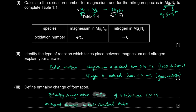If this were the standard enthalpy change of formation, the one mole of substance being made would also have to be in its standard state, and the elements would have to be in their standard states under standard conditions. But this is just the enthalpy change of formation, not the standard version. So the substance is not necessarily in a standard state, but the elements have to be in their standard states.